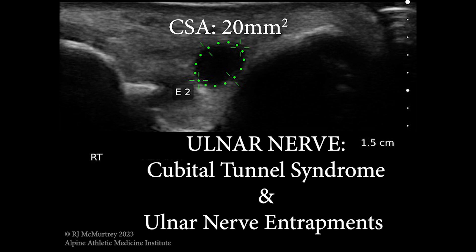The cubital tunnel on the medial elbow is the most common site for ulnar nerve entrapment, but as you'll see, it can happen in a lot of different places. When the ulnar nerve passes through the cubital tunnel, it's normally around 4 to 5 millimeters squared in cross-sectional area.